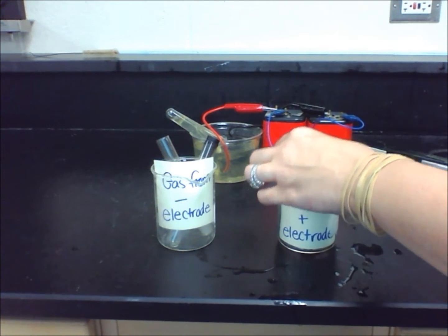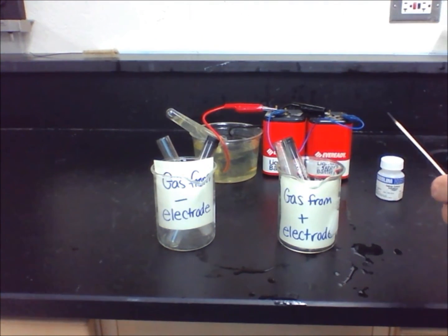When I test the gas collected from the negative electrode in tube 3 with a glowing splint, you will notice that the splint goes out.